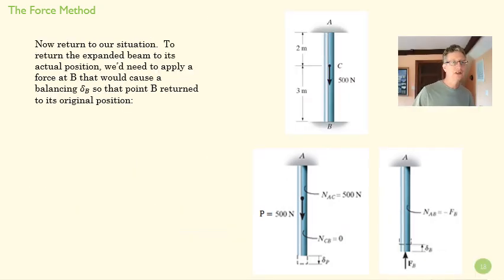So if we return to this situation, we need to apply, in order to go from here, our pretend situation with a delta P, we would have to apply a force at B, as you can see down here, in order to get us back to our original condition. And so we're going to see if we can solve for that force, okay?